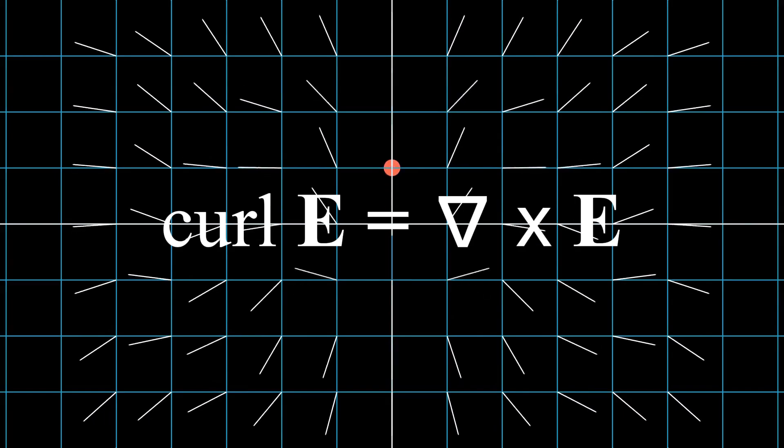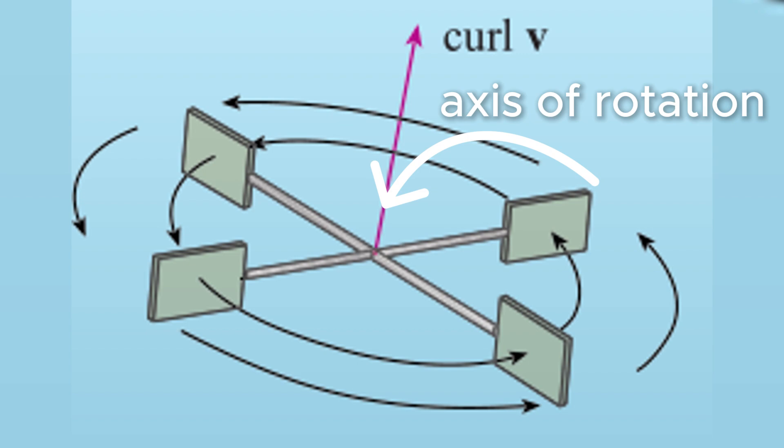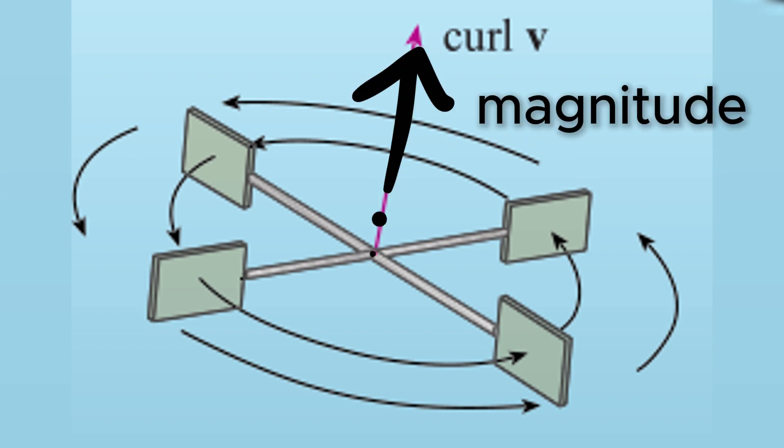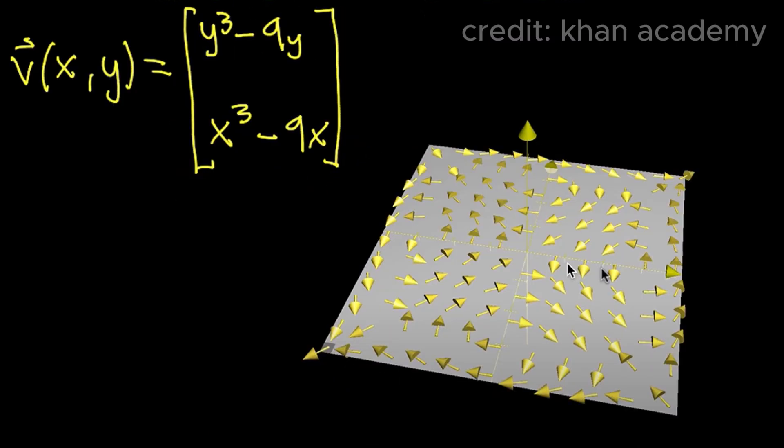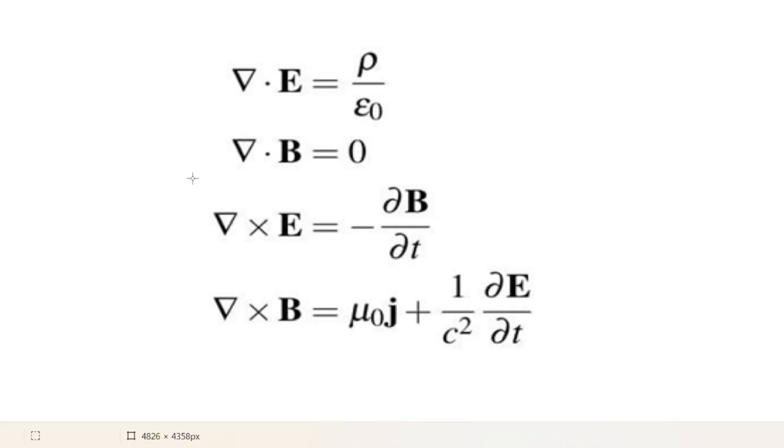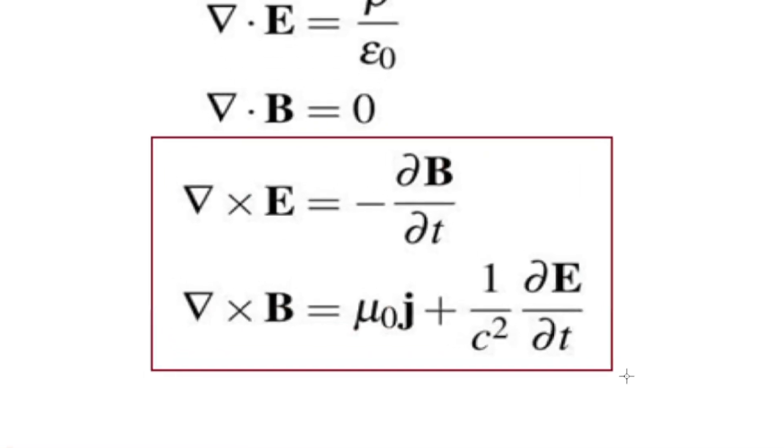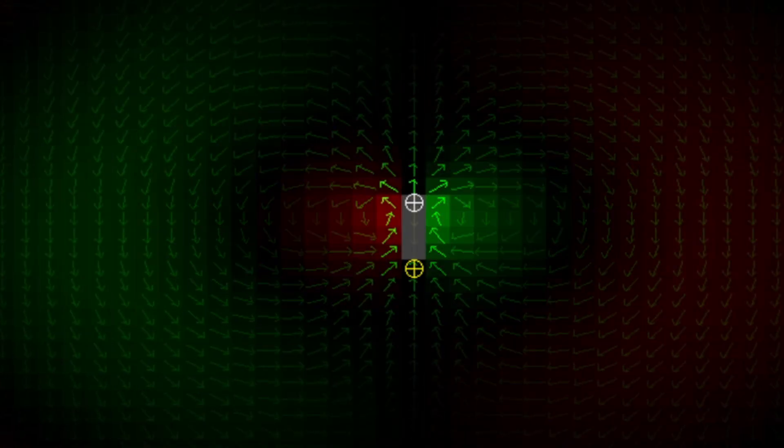So what is the curl? The curl tells us how much the field is circulating around an infinitesimal loop at a point and in what direction. The curl vector points along the axis of rotation and its magnitude tells us how strong that local rotation is. And curl itself is a vector field because it assigns a vector to each point in space. So here's the amazing part. The local rotation or the curl plays a key role in how electric and magnetic fields interact.